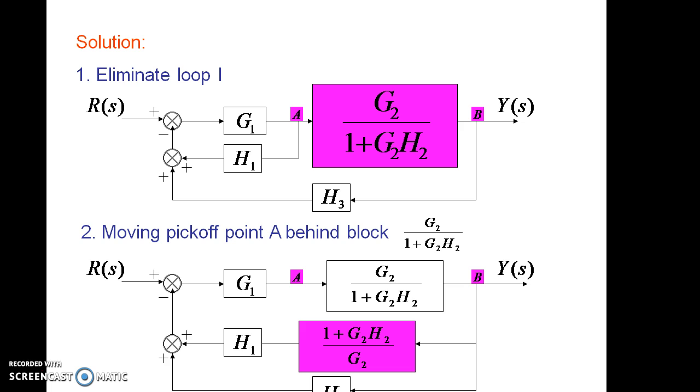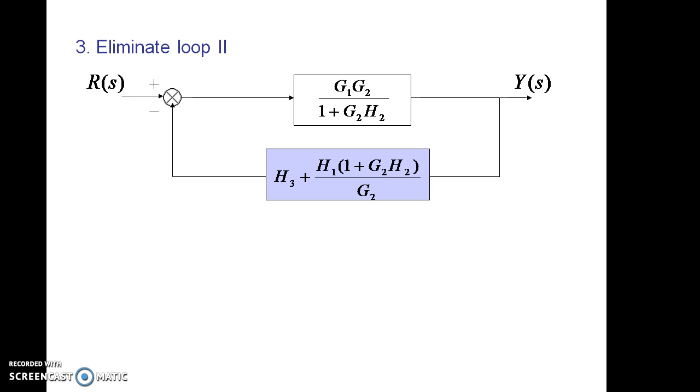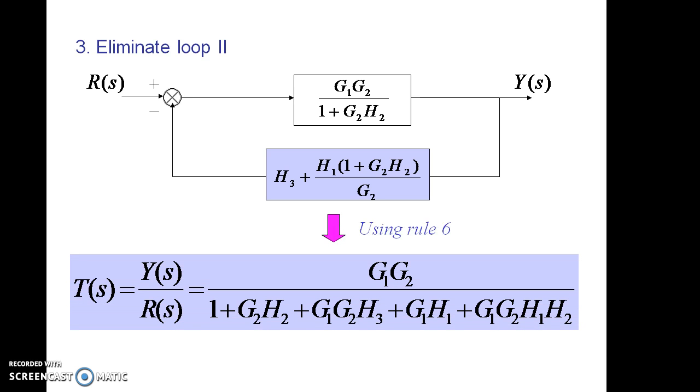Here, in two paths we have cascade connections, so those two can be combined and finally we can have the combination as H1 into 1 plus G2 H2 by G2. Again, this parallel path can be combined by adding the terms. Now we have only one feedback path which is as given in this diagram. So again by applying the transfer function formula, we can have the result as shown. This result is also obtained after simplification.